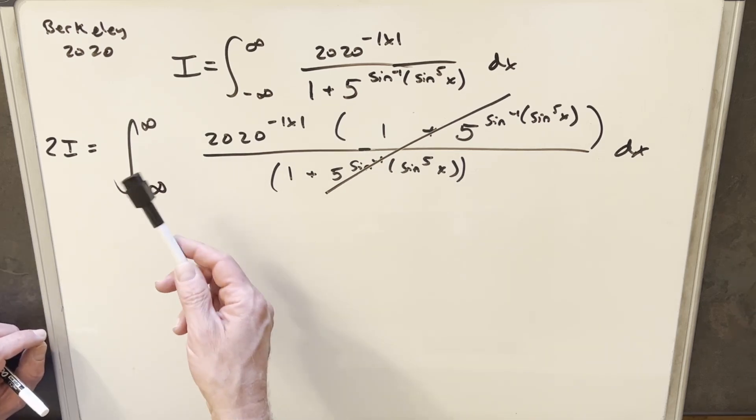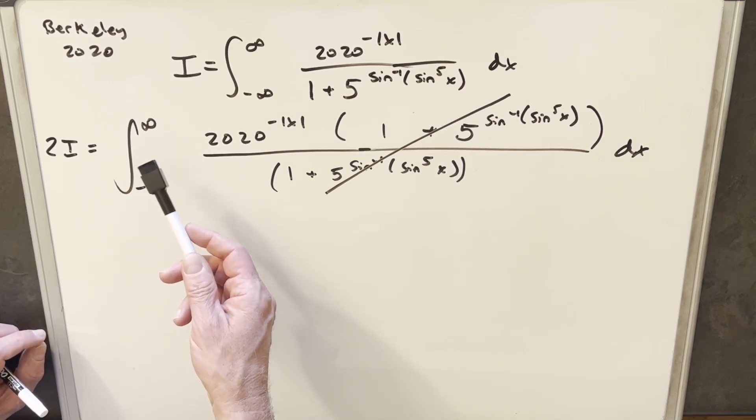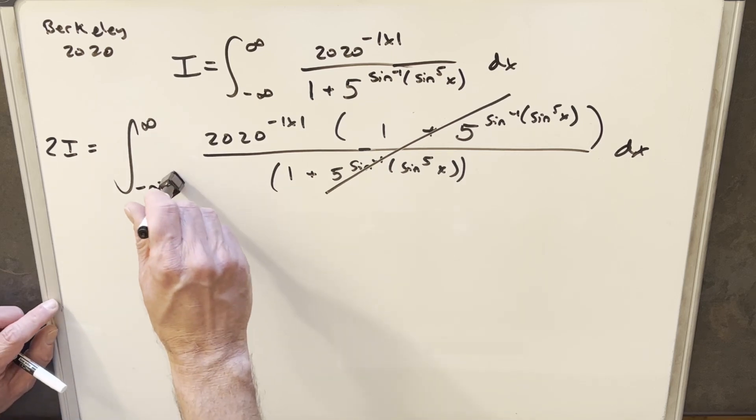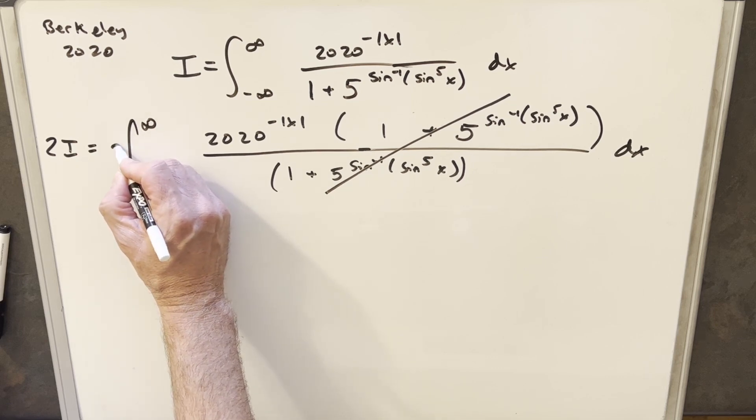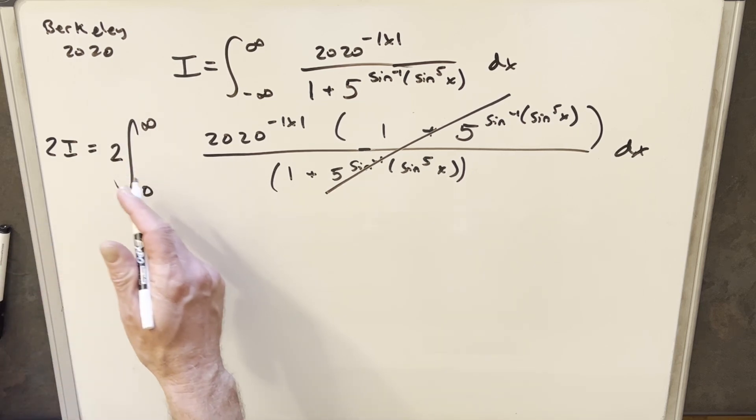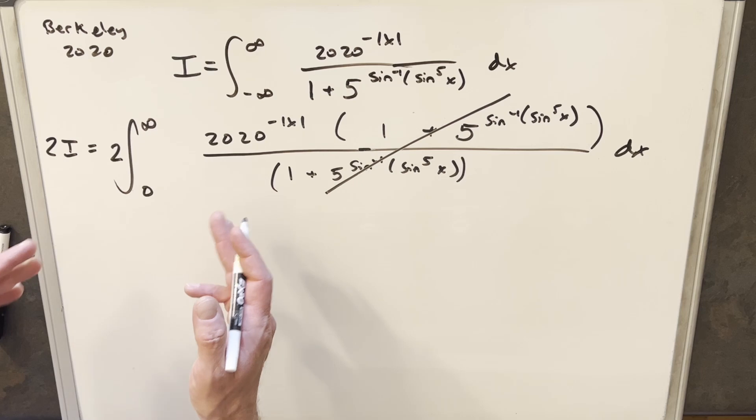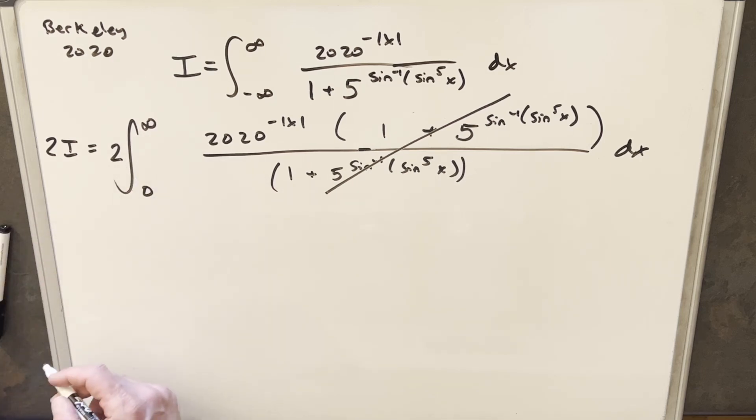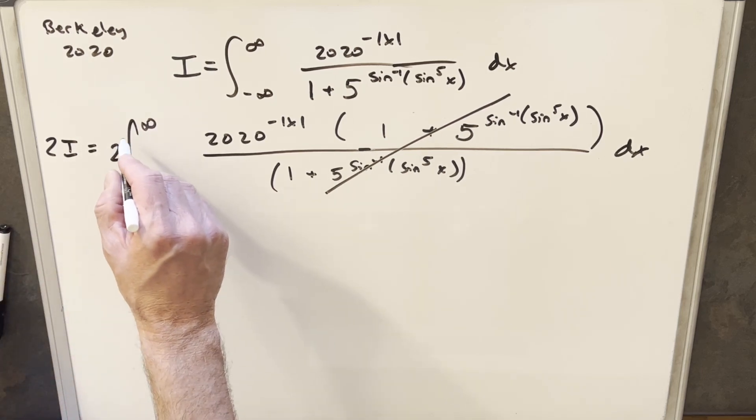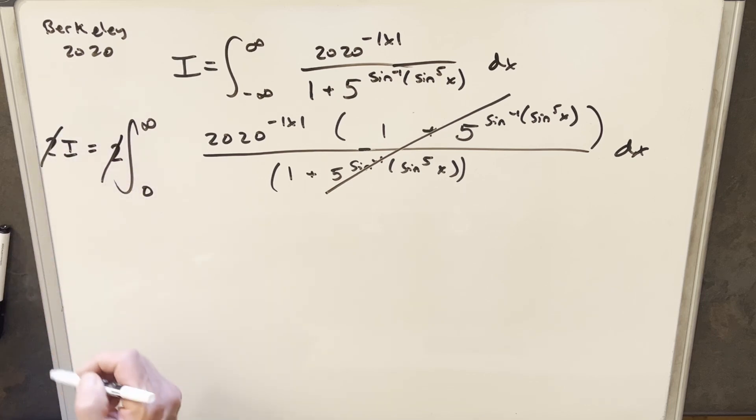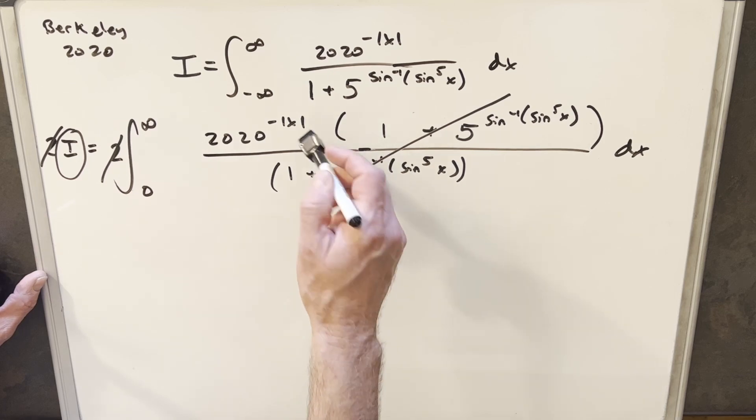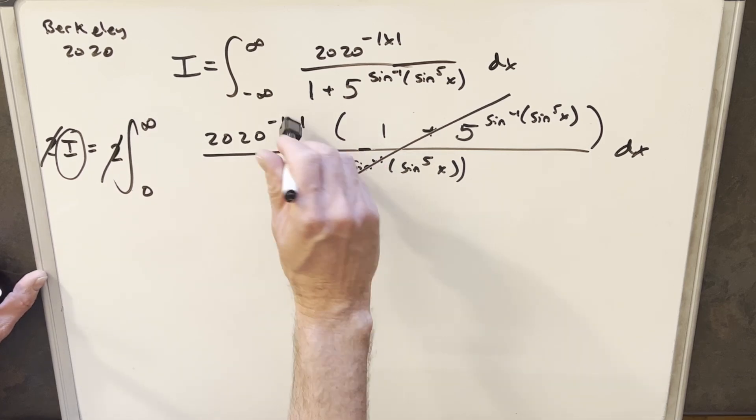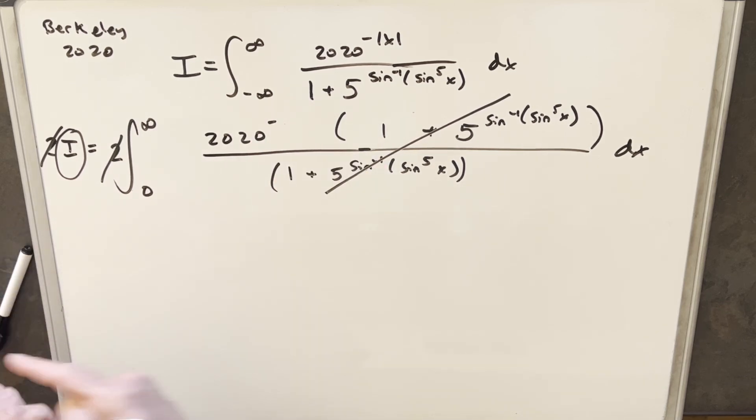Because this is an even function and the integral is symmetric around the y-axis, I can change our bound. I can change this bound to 0 and bring a 2 out front just because the integral is the same on the positive side and the negative side. Well, this 2 is going to cancel with this 2. And so now we're just solving for our integral. Because our bounds are all positive now, we can take away the absolute value because everything is going to be positive there. And we can just write this as 2020 to the minus x.